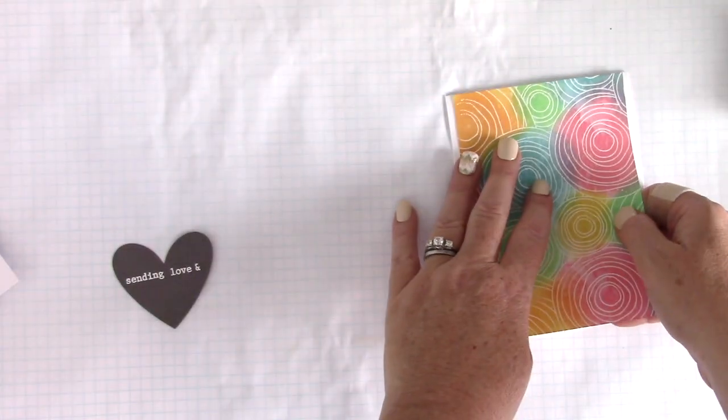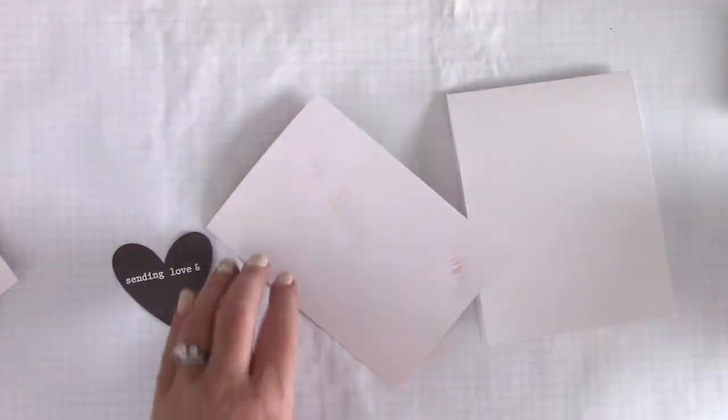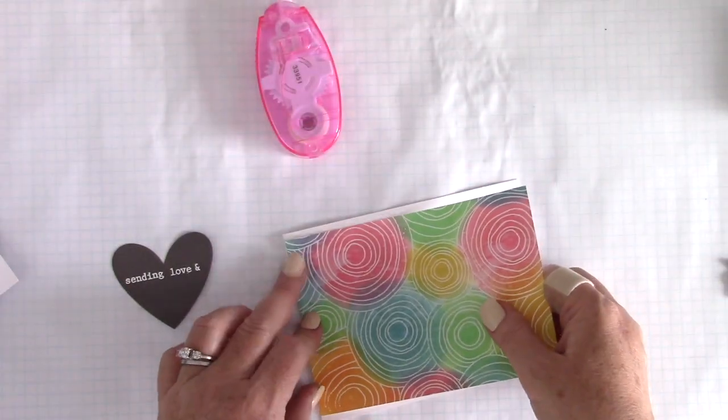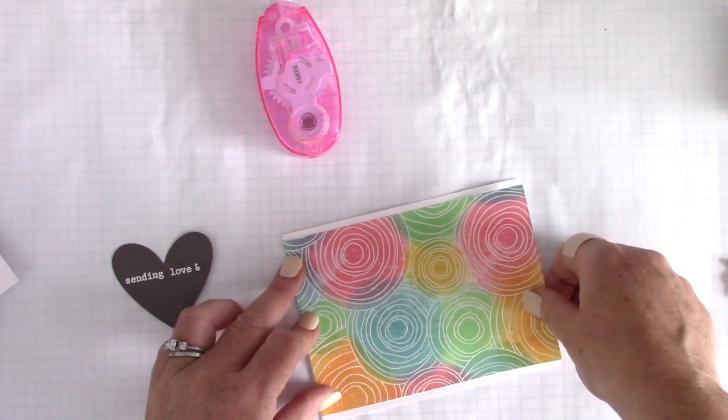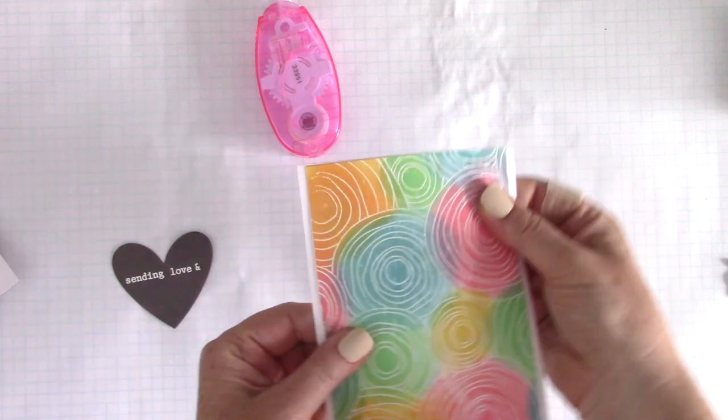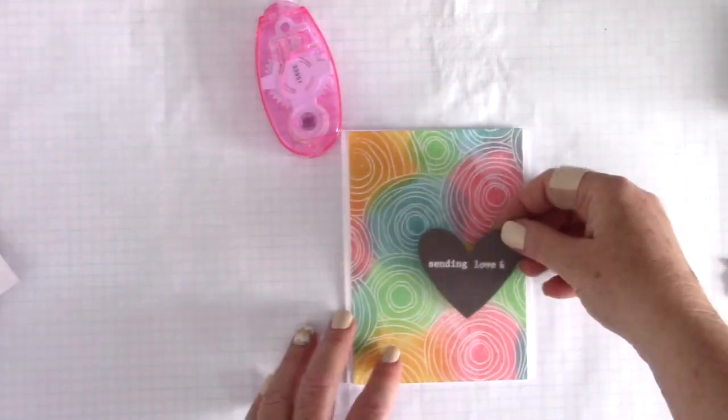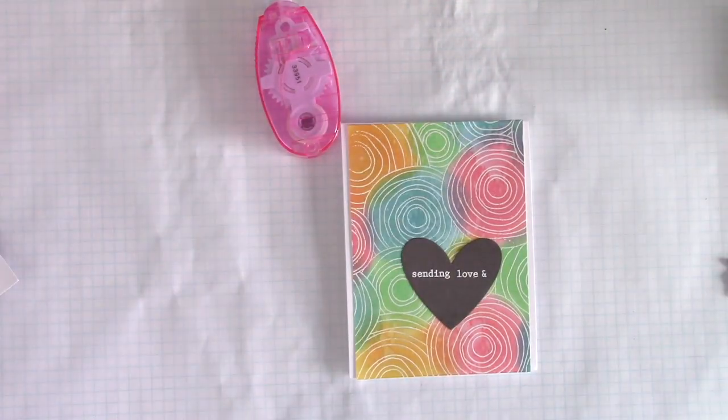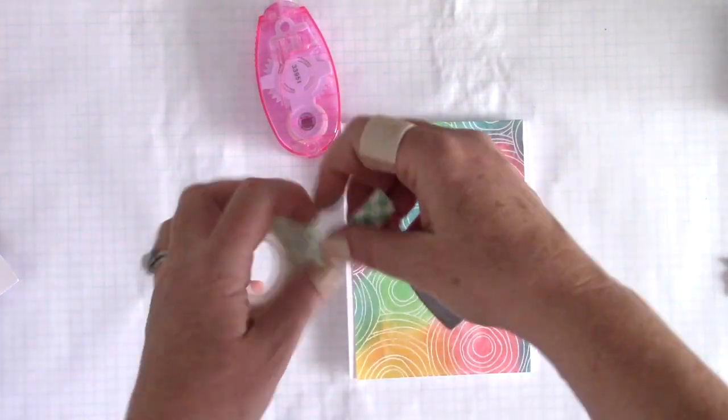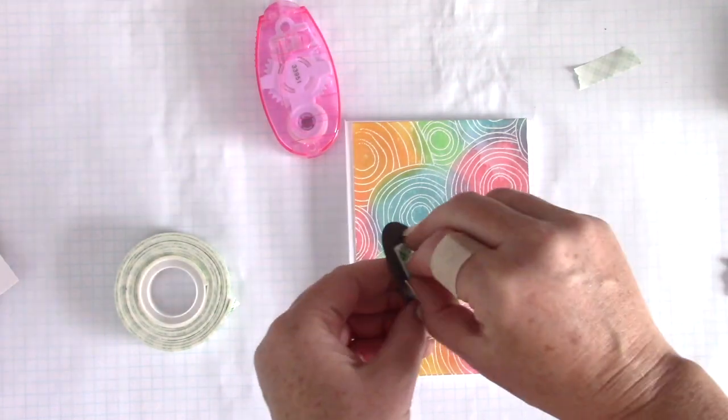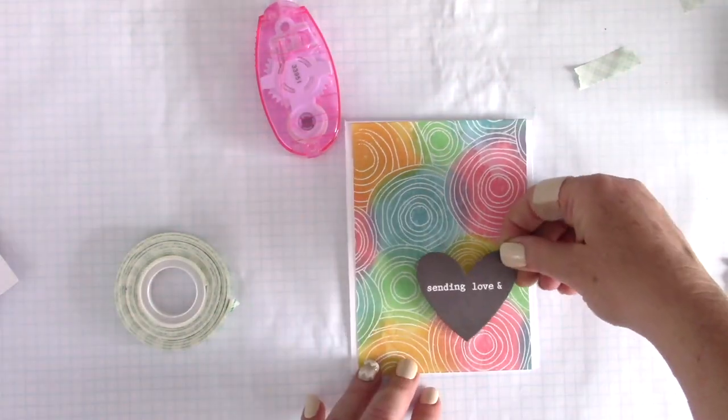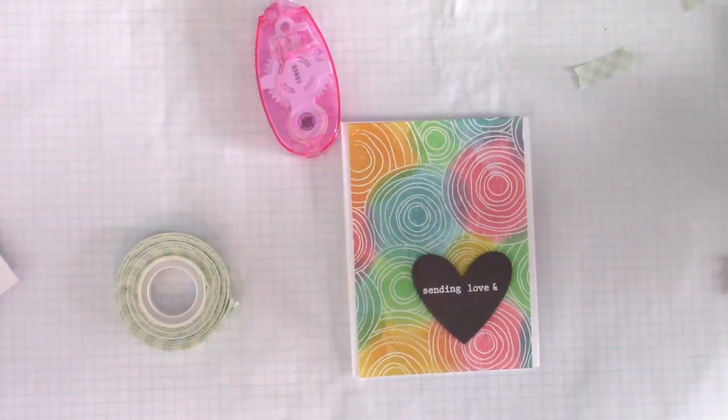I trimmed off a little bit on the side so the width is less than four and a quarter. I am taking my Thermoweb Memory Runner XL and just adhering this panel that I have created down to a typical card base, which is four and a quarter by five and a half. Now I have my grey card stock heart with the sentiment. I am going to put a little bit of foam tape on the back—I want it popped up but not too much. I am going to lay that down.